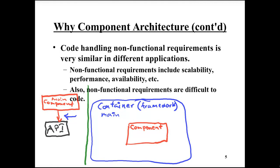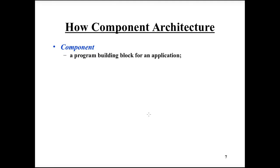Both could alternatively receive a network call, but here it is the container that calls the component. The component only needs to know about application-specific code — when called, it performs that code. On the left image, the component must have flow control, meaning the application developer must know when to make a security check or start a transaction. But with the container approach, the container makes security checks or starts transactions before calling the component, and the component executes only application-specific code, then returns to the container for any remaining non-functional requirements.